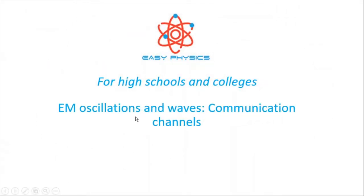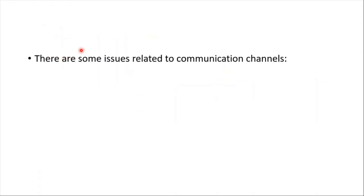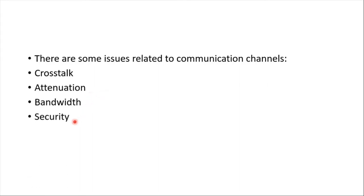In this lesson, we are going to look at the communication channels. You will be able to understand that information may be carried by a number of different channels, including wire pairs, coaxial cables, radio and microwave links, and also optic fibers. We are going to look at all of these one by one. But first, let's look at some related issues: crosstalk, attenuation, bandwidth, and also security.